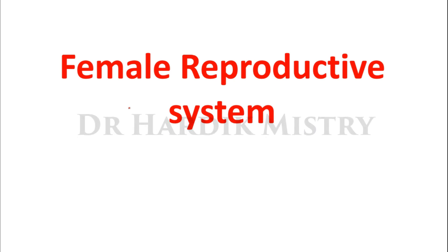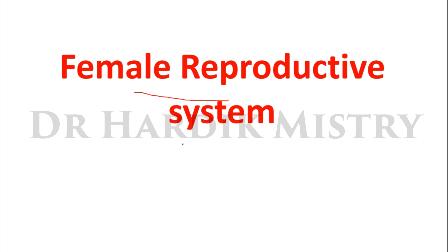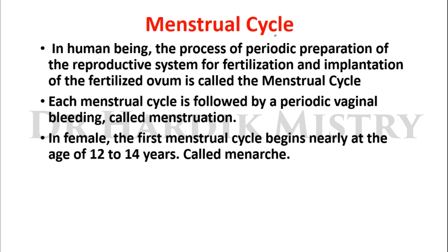In this video we are going through the female reproductive system, specifically the menstrual cycle. The menstrual cycle in human beings is the process of periodic preparation of the reproductive system for fertilization and implantation of the fertilized ovum. Each menstrual cycle is followed by periodic vaginal bleeding that is known as menstruation.